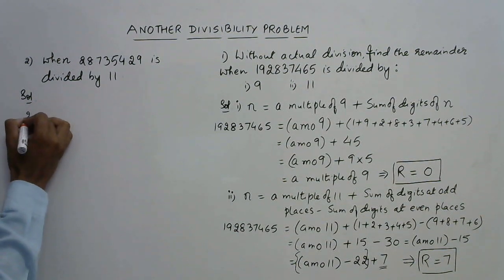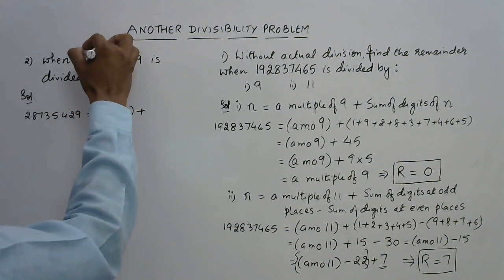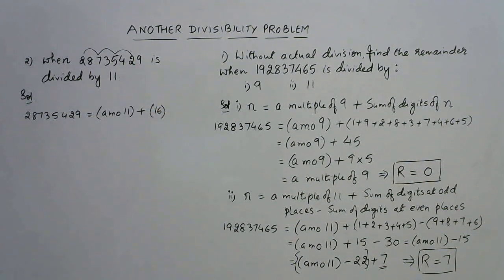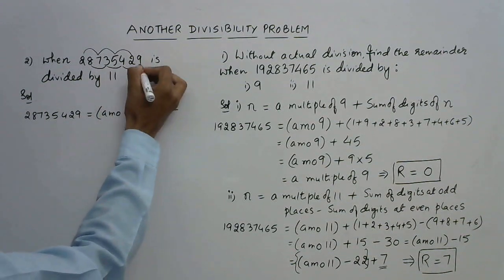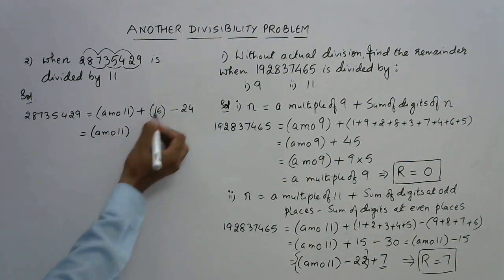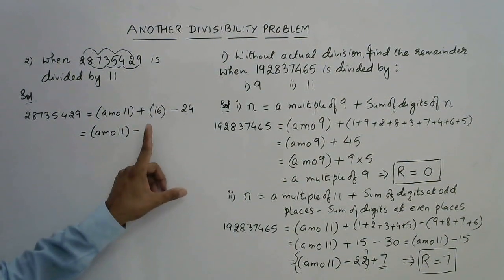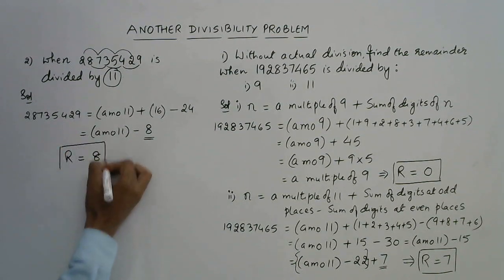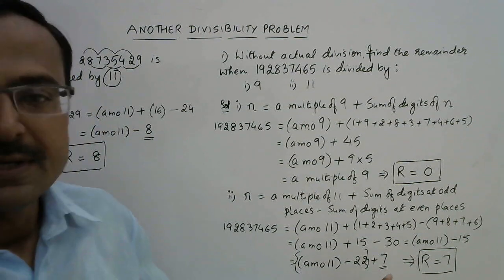Now I am expressing the second number 28735429 as a multiple of 11 plus the odd-place and even-place difference. Odd places are 2 + 7 = 9, + 5 = 14, + 2 = 16. Even places are 8 + 3 = 11, + 4 = 15, + 9 = 24. So this becomes a multiple of 11 plus 16 minus 24, which is minus 8. Here the number 8 is smaller than the divisor 11, so the remainder is automatically 8. In the previous case the result was 15 which was greater than 11, so I expressed it as 22 minus 7.